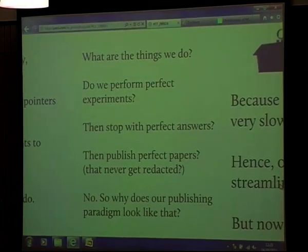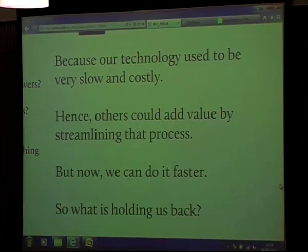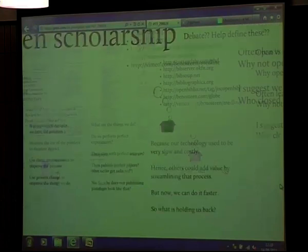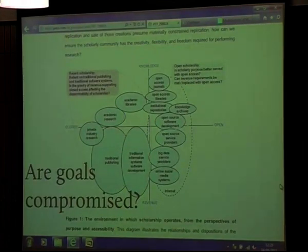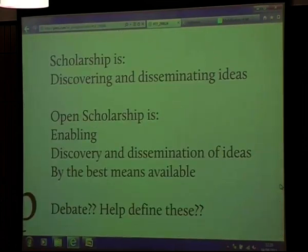Although we have all this technology, we have different ways of doing it. Do we perform perfect experiments, perfect answers, and publish perfect papers? No — we do what we can and then we publish that. Sometimes they get retracted. But the publishing paradigm looks like this. Part of the problem was it was very slow and costly to publish a book. Publishers came along and made that simpler but also put in the steps — make the book, wait a few months, publish it. Now we can do that faster. If we compare closed to open knowledge to revenue, academic research currently is actually very close to publishing and information system software development, which are closed revenue systems. Whereas with scholarship, what we want is open knowledge, so we have to make sure we can move in that direction.